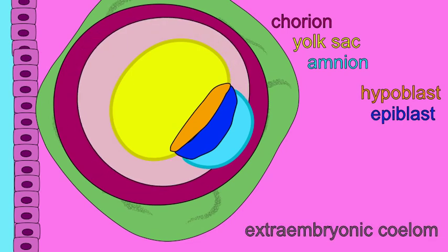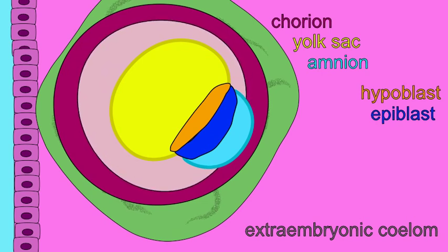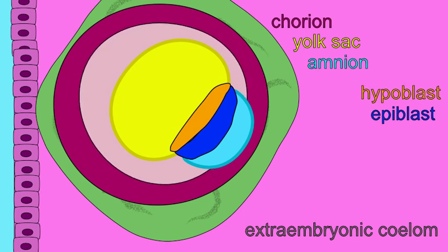Beginning 12 days after development, a space develops between the chorion and the amnion yolk sac and embryo known as the extraembryonic coelom.